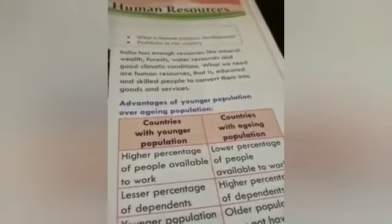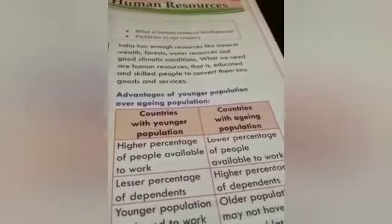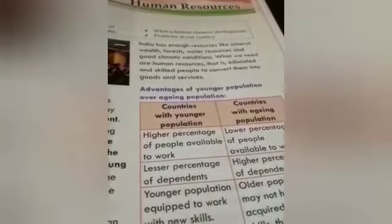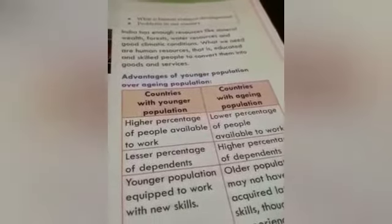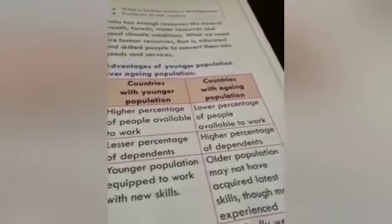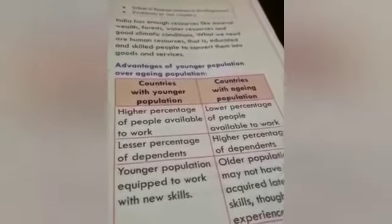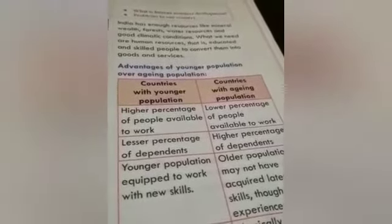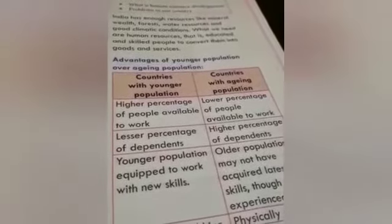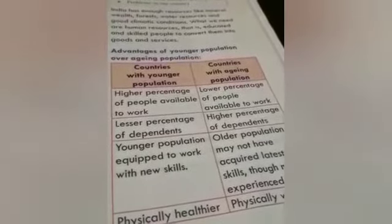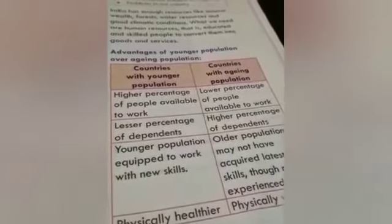Now, if we compare countries with young population versus countries with aging population, we find that a higher percentage of people are available to work in countries with young population. But in countries with an aging population, there is a lower percentage of people available to work, maybe due to sickness or physical disabilities. Similarly, we have a less percentage of dependents in countries with young population, whereas a high percentage of dependents are found in countries whose population comprises aged human resources.